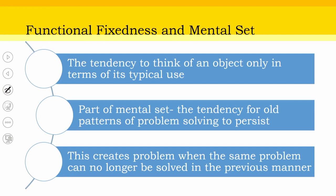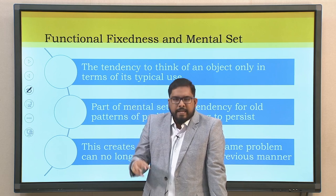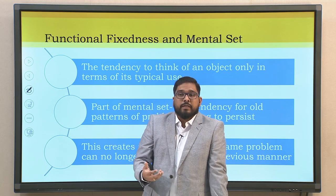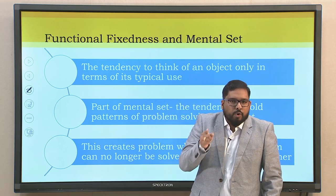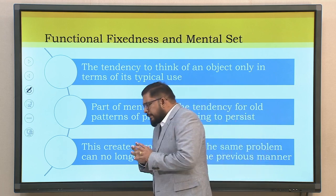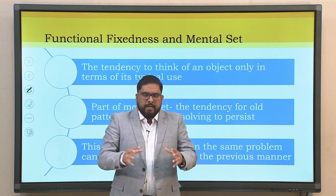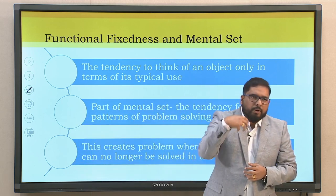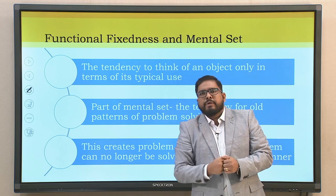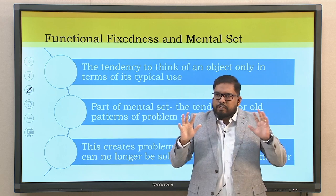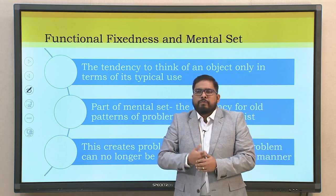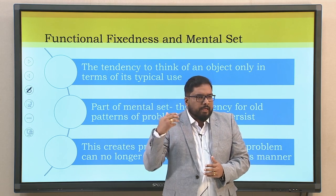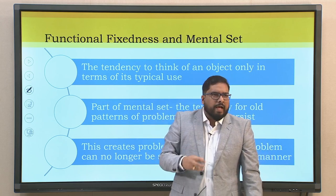There is always a threat of functional fixedness. When looking into creativity, we have to understand that functional fixedness and mental set could emerge as an issue - it is a double-edged sword. Functional fixedness is the tendency to think of an object only in terms of its typical use. Many times we have a mental model that these are the resources I have and this is the way it has to be done. There needs to be fresh rethinking on the possibilities those resources can offer. We have to look into alternatives and change from the functional fixedness or mental set we are breeding.